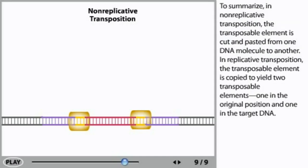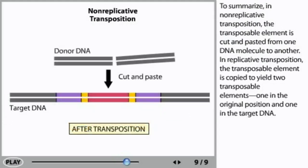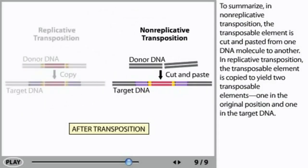To summarize, in non-replicative transposition, the transposable element is cut and pasted from one DNA molecule to another. In replicative transposition, the transposable element is copied to yield two transposable elements, one in the original position and one in the target DNA.